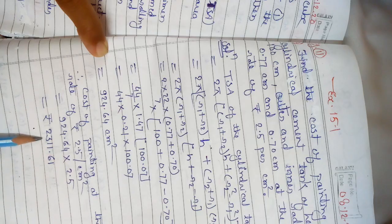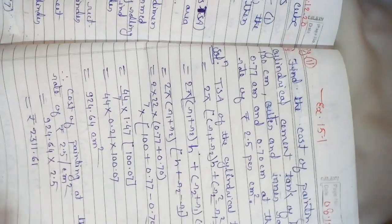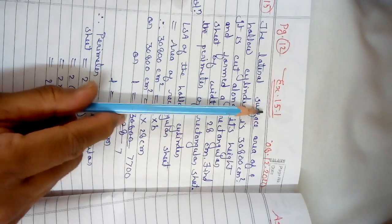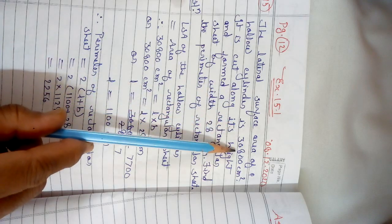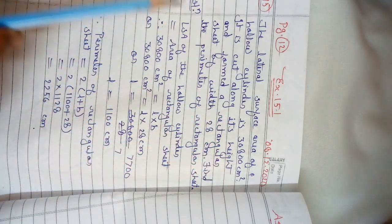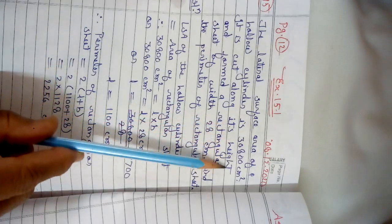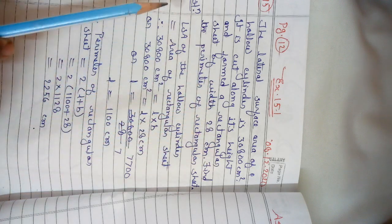Question number 15 of exercise 15.1: The lateral surface area of a hollow cylinder is 30,800 square cm. It is cut along its height and formed a rectangular sheet of width 28 cm. Find the perimeter of the rectangular sheet.